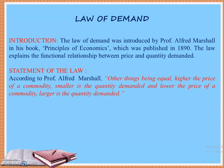According to Professor Alfred Marshall, other things being equal, higher the price of a commodity, smaller is the quantity demanded, and the lower the price of a commodity, larger is the quantity demanded.